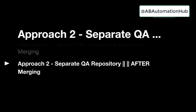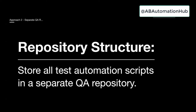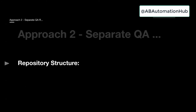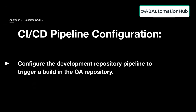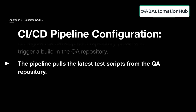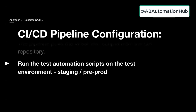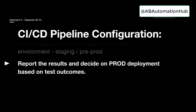Now comes the second sub-approach: test cases maintained in the QA repository, but after merging the code we call the test automation script. The repository structure is the same — all scripts inside the separate QA repository. Configure the dev pipeline to trigger a build in the QA repository. The pipeline pulls the latest scripts from the QA repository, runs the script on the environment — pre-prod or staging. But in this case, our code is already merged. Based on results, you can report if it's passed or failed and whether it's ready to deploy to the next higher environment — prod or pre-prod.